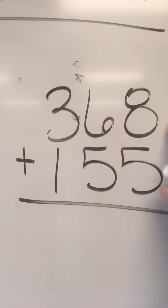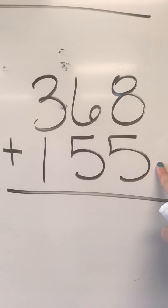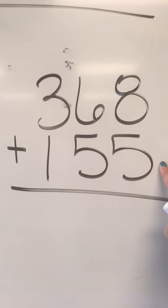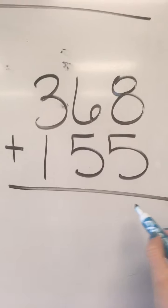We have eight ones plus five ones. You can use whatever strategy you need to in order to answer this problem. Eight plus five is thirteen.